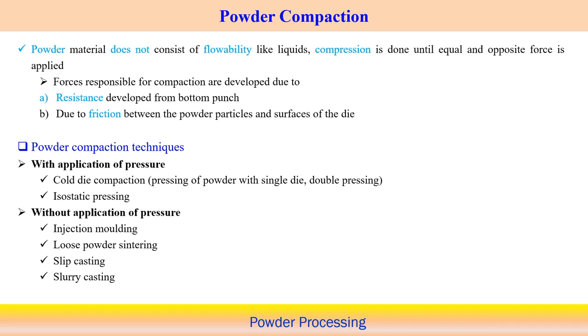Powder can be compacted to make a particular shape and size of a component. Powder material does not have the flowability of liquids, so it is necessary to apply compressive load until equal and opposite forces are applied to break uniformity in compaction — it is better to apply the same amount of deformation from both top and bottom sides. The forces responsible for compaction develop due to resistance from the bottom punch, friction between powder particles, and friction between the surfaces of the die.